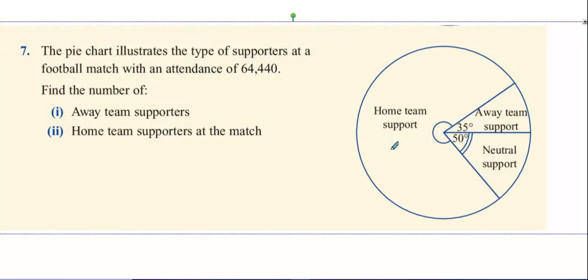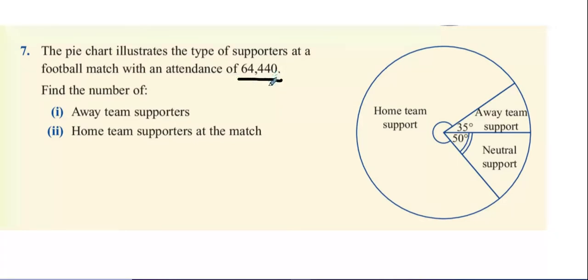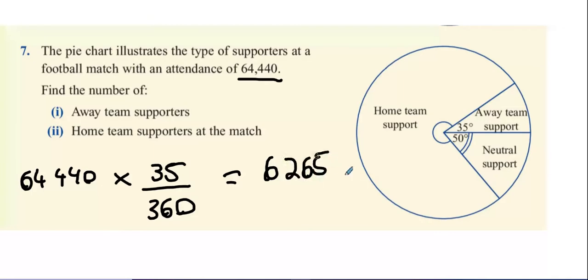A pie chart illustrates a football match. This many people went to the football match. We have neutral support, home team support, and away team support. Calculate the away team supporters. Well, it's 64,440. And you've got to multiply that by 35 over what? 360. Because of the way the angle is, it's 35 degrees out of 360 degrees is how much, what fraction of away supporters there are. So what happens when you multiply that out? What do you get? 6,000? Yeah. There we go with that.